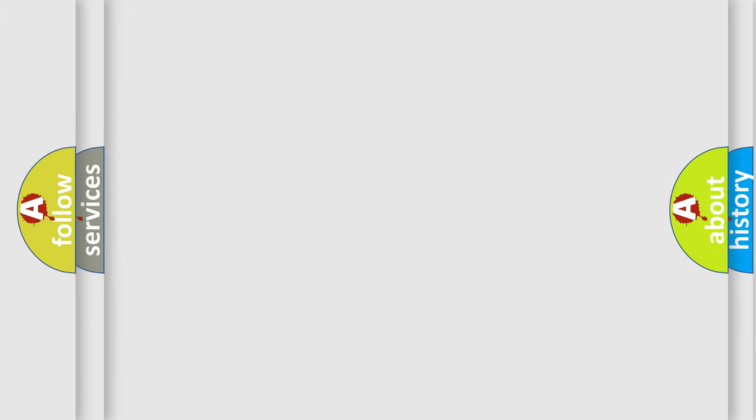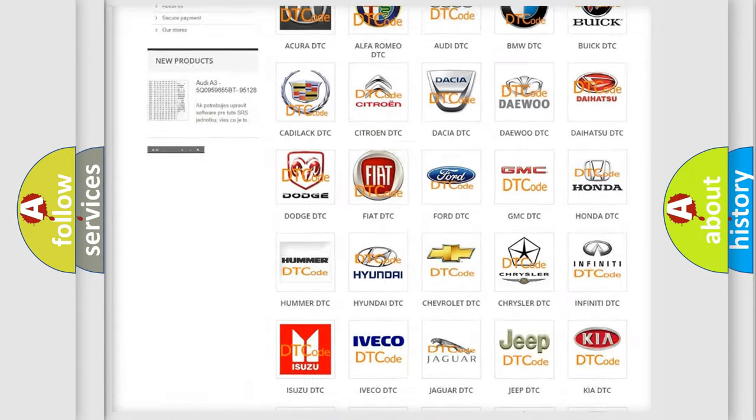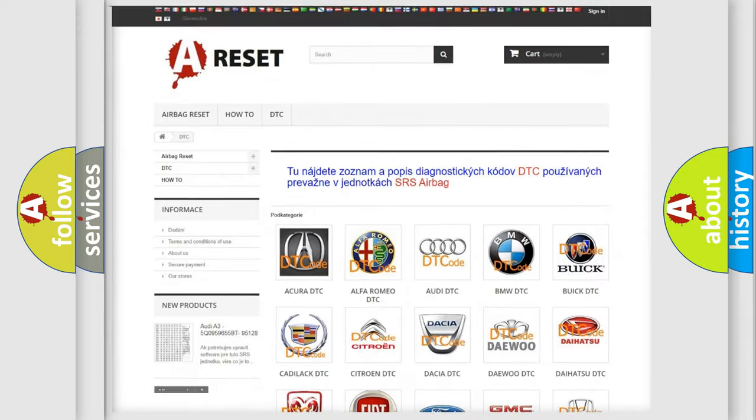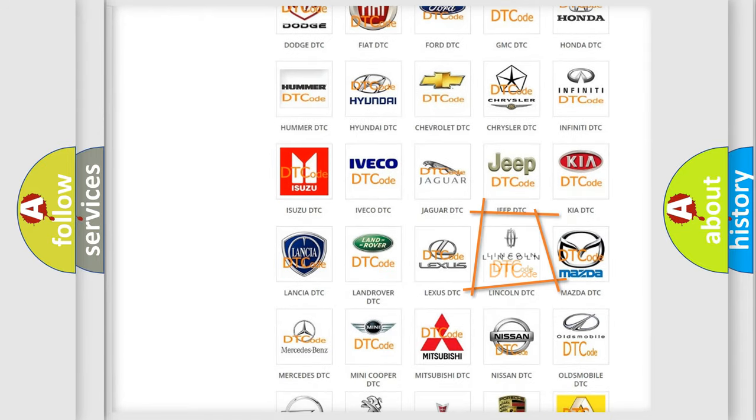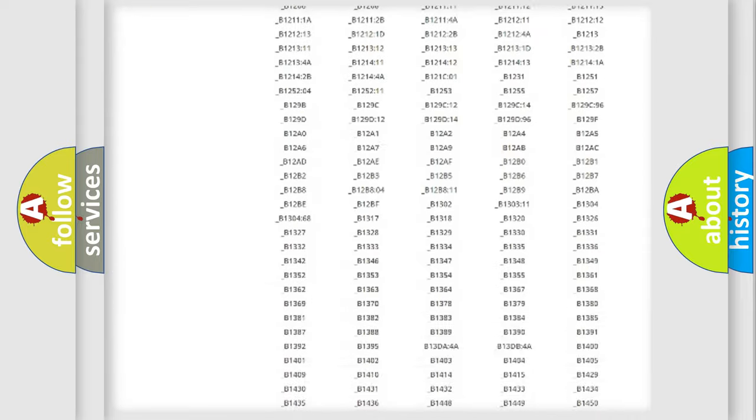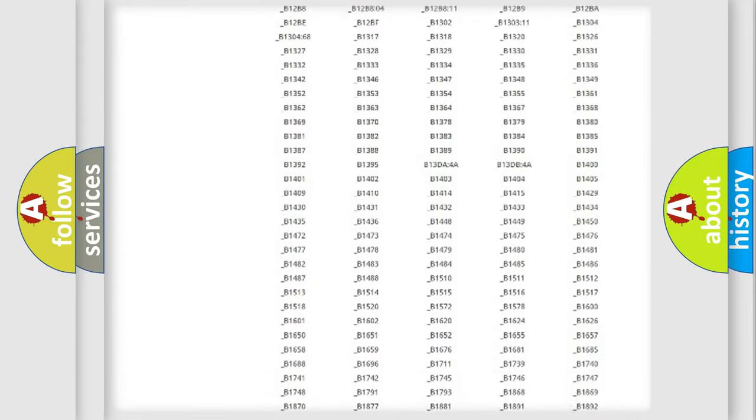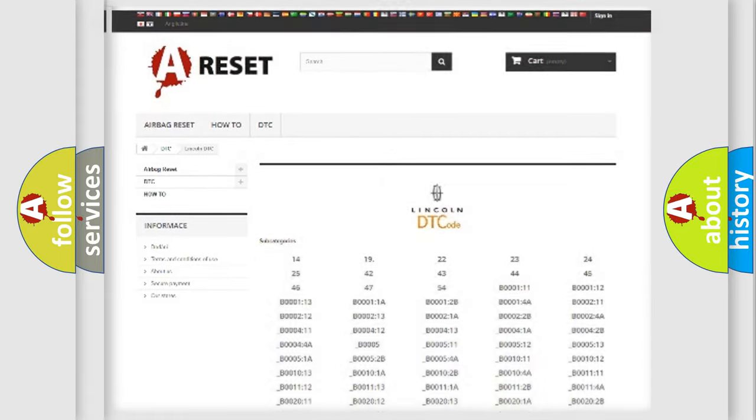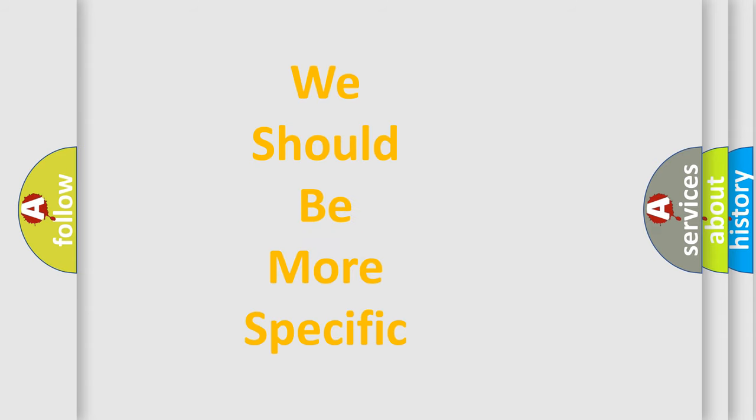Our website airbagreset.sk produces useful videos for you. You do not have to go through the OBD2 protocol anymore to know how to troubleshoot any car breakdown. You will find all the diagnostic codes that can be diagnosed in Lincoln vehicles, and many other useful things. The following demonstration will help you look into the world of software for car control units.